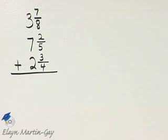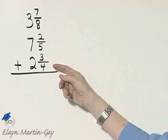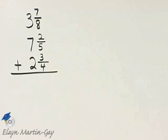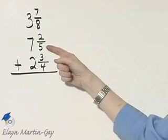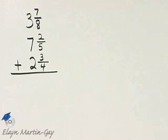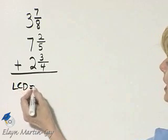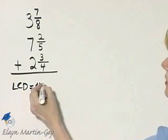Let's find the sum of these mixed numbers. Remember to add or subtract mixed numbers, we do have to have a common denominator. I will definitely leave these in mixed number form and simply add vertically. Now notice the denominator of 8, denominator of 5, denominator of 4. What is the least common denominator? I'll write it over here. The least common denominator is 40.